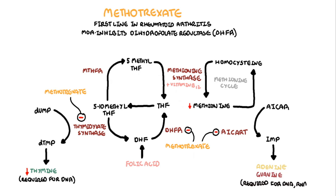By inhibiting AICART, methotrexate reduces purine nucleotides and increases AICAR. Aside from impairing nucleic acid synthesis to make DNA, the increased AICAR is also thought to have anti-inflammatory effects.